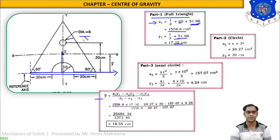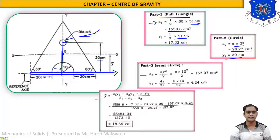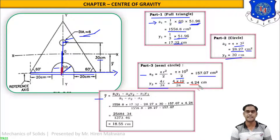For the small circle with diameter 6 cm, radius = 3, so A2 = π·r² = π × 3² = 28.27 cm². The distance from the center to the bottom is given as 30 cm, so y2 = 30 cm. For the semicircle, A3 = πr²/2 = π × 10²/2 = 157.07 cm². The CG of a semicircle is at 4r/(3π) from the base, so y3 = 4×10/(3π) = 4.24 cm.